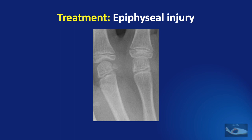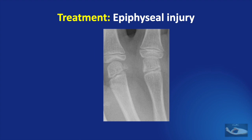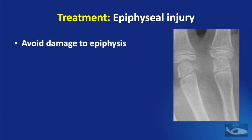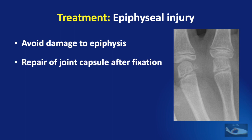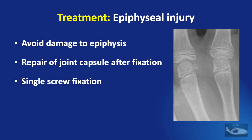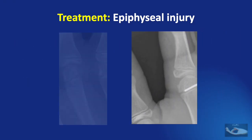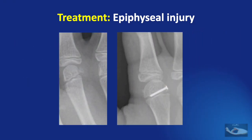For epiphyseal injuries involving the metacarpal head, we must avoid further damage to the growing epiphysis, repair the joint capsule after management, and use single screw fixation, which is ideal for such epiphyseal injuries.